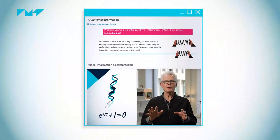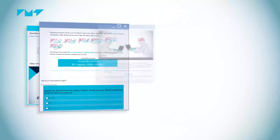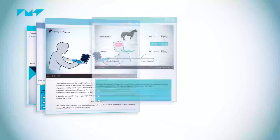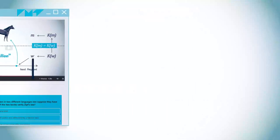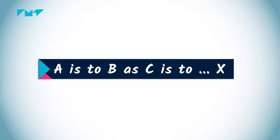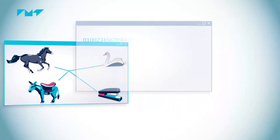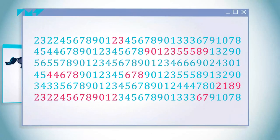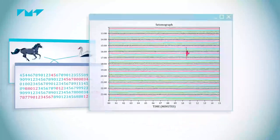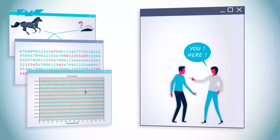This course will show you how to apply algorithmic information theory to various artificial intelligence problems, such as minimizing risk when generalizing from data, solving analogies, exploiting the web to analyze word meaning, deciding whether a series of symbols is random, detecting anomalies, and computing the relevance of events.